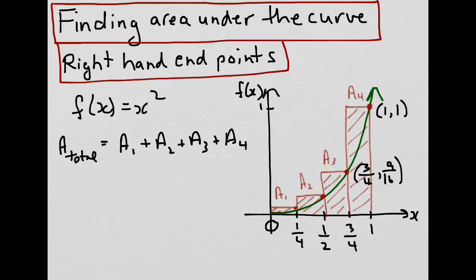And so on. The right-hand endpoint for the second rectangle would be x equals one half. Substituting into the function gives us one quarter. And for the first rectangle, x would be one quarter, and y, where f of x, would be one sixteenth.